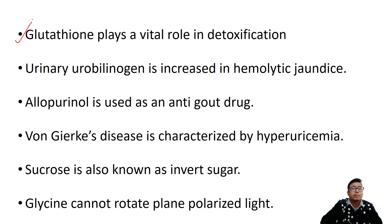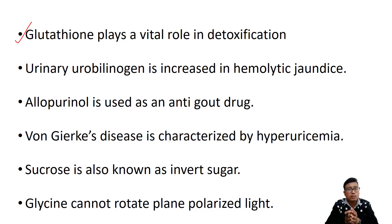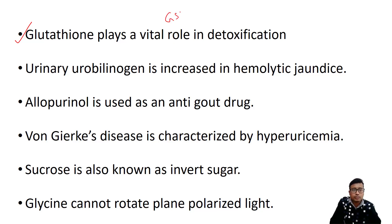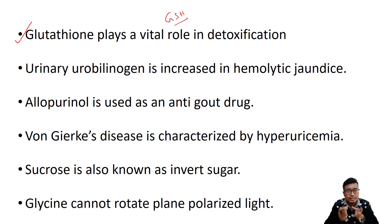We start with the first one: glutathione plays a vital role in detoxification. The answer lies in two parts. Number one, glutathione is an agent of phase two conjugation of xenobiotics. Glutathione is composed of glutamine, cysteine, and glycine, and it is the cysteine residue that helps in conjugation of all heavy metals and toxins. Glutathione is represented as GSH, and the cysteine residue of GSH helps in conjugation and detoxification.